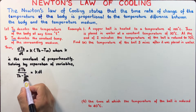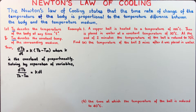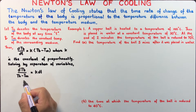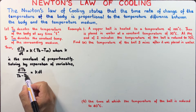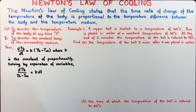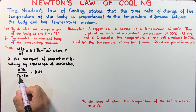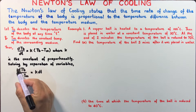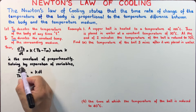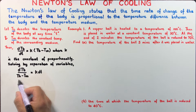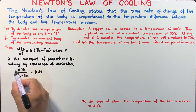Notice that T sub M is the temperature of the surrounding medium and is a constant, not a varying temperature. So the derivative of T sub M must be zero. Therefore, if you get the derivative of the denominator T sub B minus T sub M, the derivative is just the derivative of T sub B, which is found in our numerator. So this fraction represents DU over U, where U is the denominator.